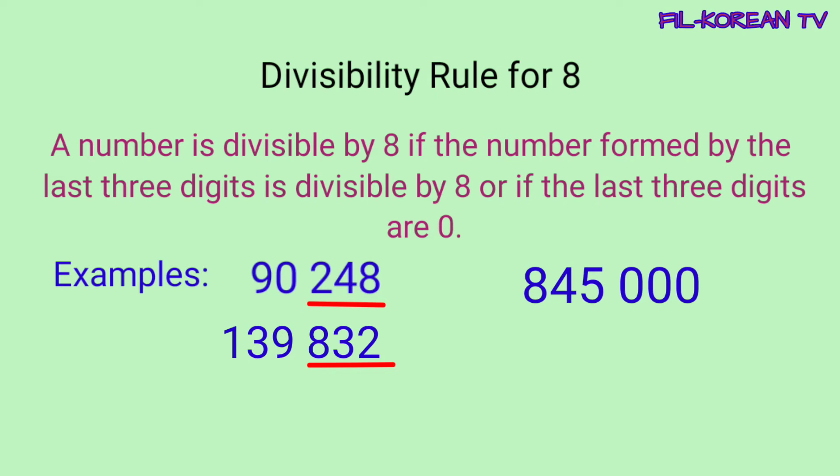Another examples: 845,000 and 2,153,000. Ang mga number na ito ay nagtatapos sa tatlong 0, kaya naman ang mga ito ay divisible by 8. Tandaan: kapag ang number ay nagtatapos sa tatlong 0, ito ay divisible by 8. O kaya naman, kapag ang number na nabuo ng tatlong numero sa hulihan ay divisible by 8 or multiple ng 8, yung given number ay divisible by 8.